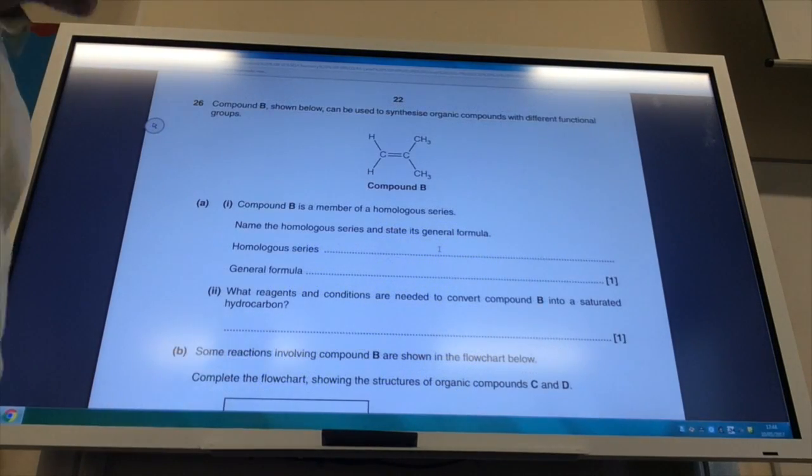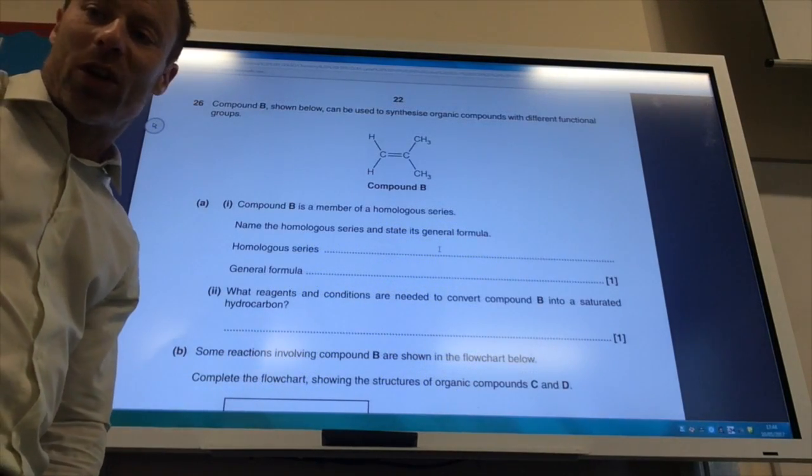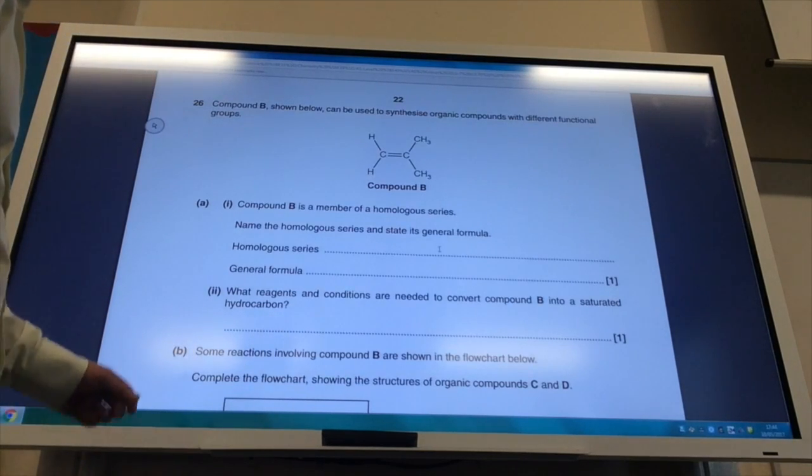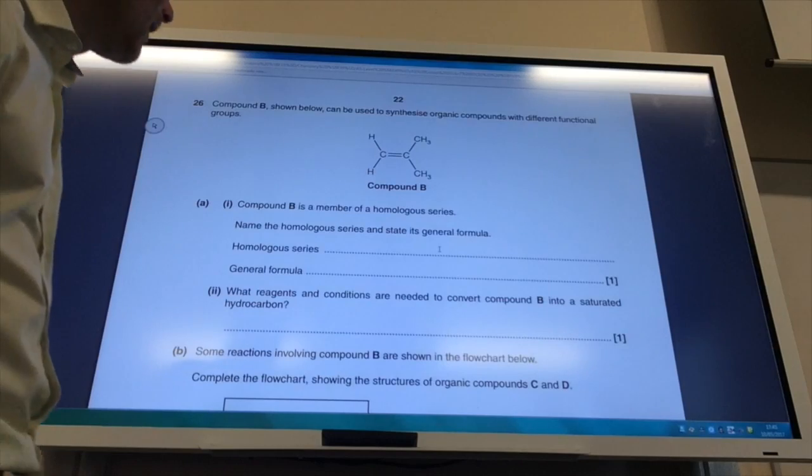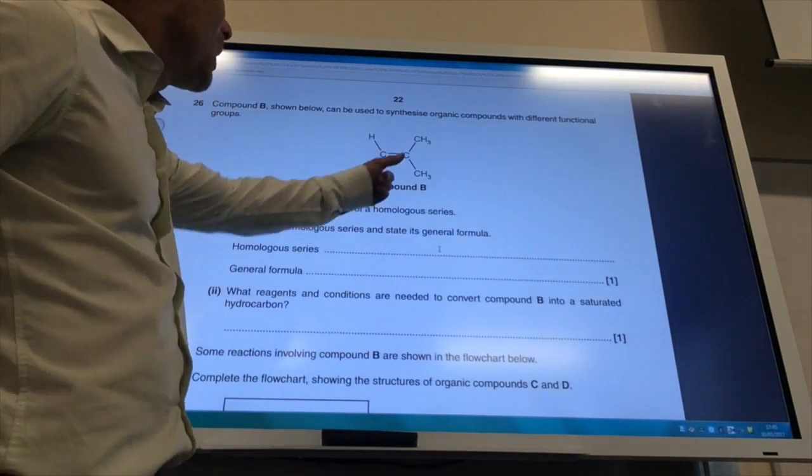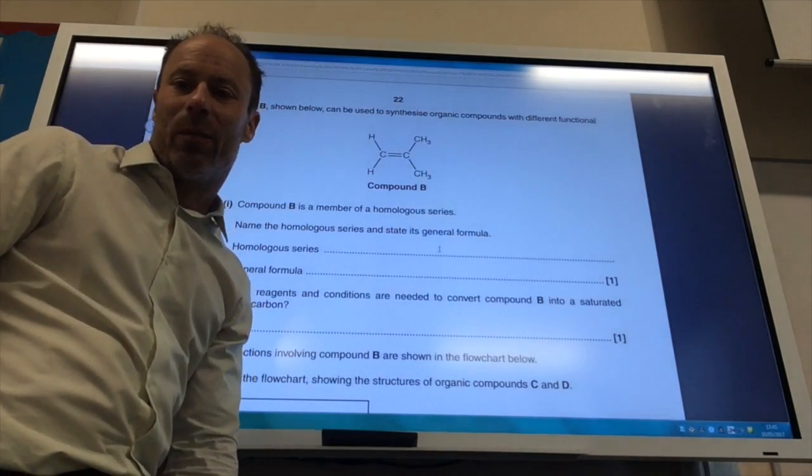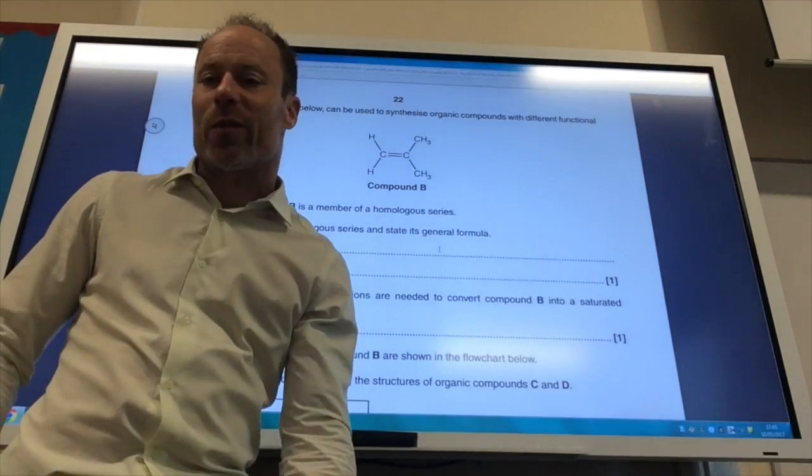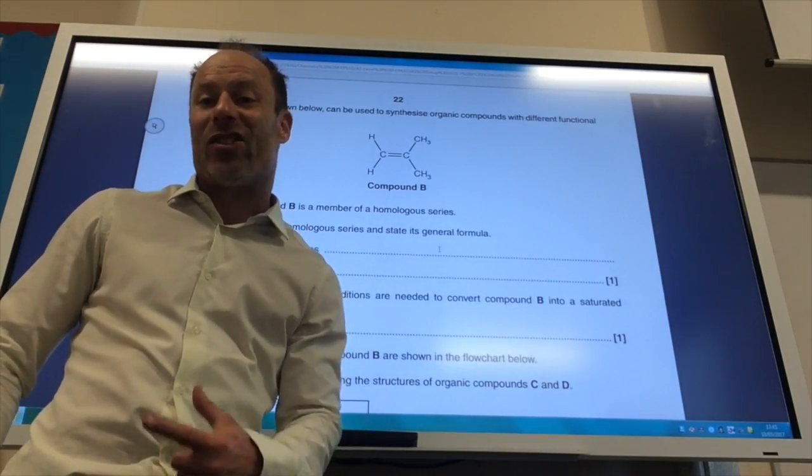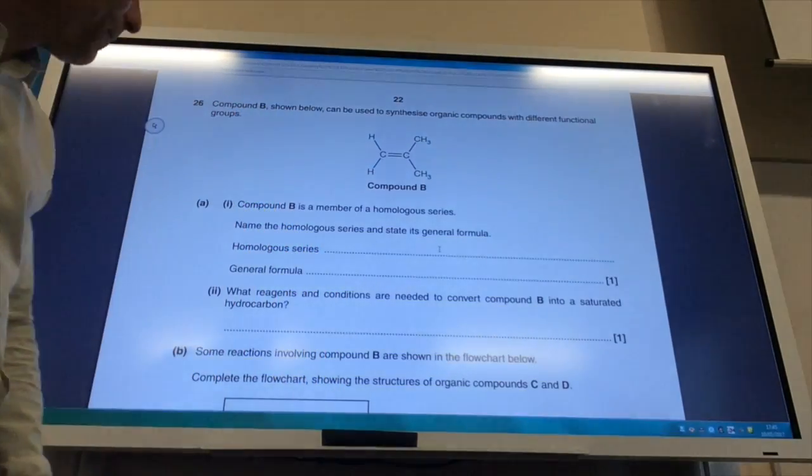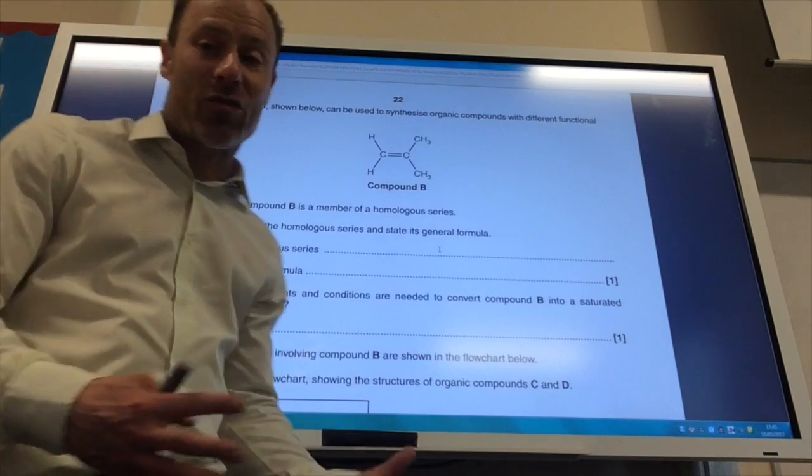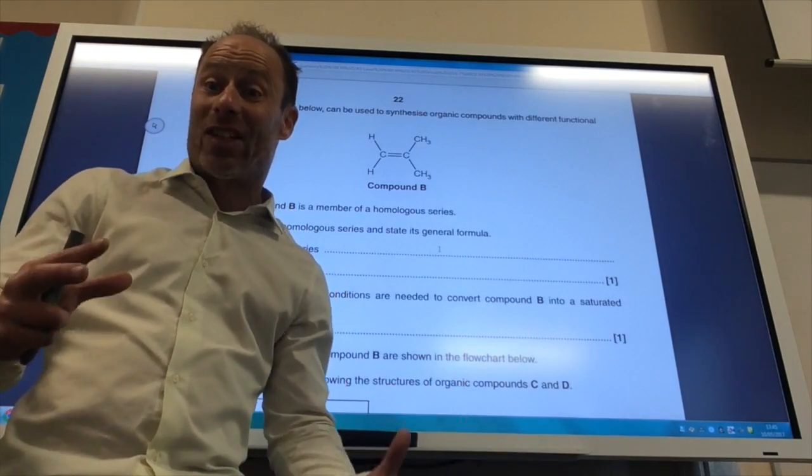Okay, and now we get into some good old-fashioned organic chemistry. So, first of all, name the homologous series that this is a member of. Well, of course, it's an alkene, isn't it? You've got a double bond there. Pretty simple. What's the general formula? Well, we know the general formula for an alkene is CnH2n. What reagents and conditions that need to convert compound B into a saturated hydrocarbon? If I'm making it saturated, I'm getting rid of that double bond. So, I would be using hydrogen with a nickel catalyst.